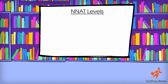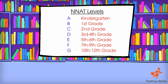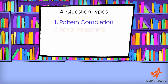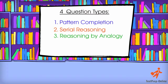There are seven testing levels for the NNAT, which are divided by age group. The NNAT has four question types: pattern completion, serial reasoning, reasoning by analogy, and spatial visualization.